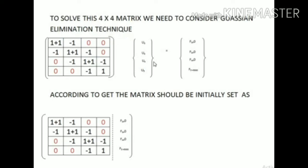According to the Gaussian elimination technique, the matrix should initially be written out, and then the parameters on the right-hand side are written as a separate column to form an augmented matrix. In this way, you arrange the matrix — with the stiffness matrix on the left, a dividing line, and the force vector as a separate column on the right — in order to find the solution.